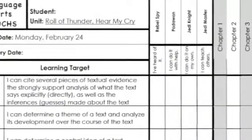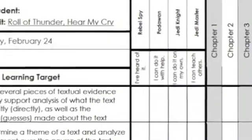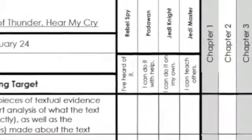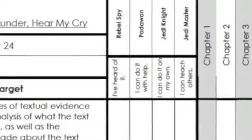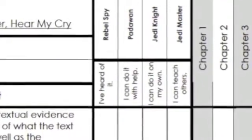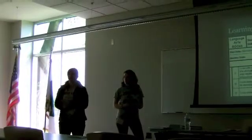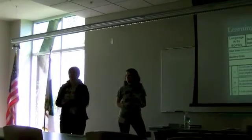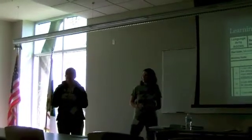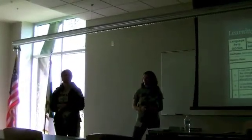You can see on the side I have the different chapters listed. As they go throughout the novel, they reflect at the end of each chapter on what they felt like they learned about those different learning targets and how they've grown. Then at the very end of the unit, they assess themselves again. We're trying to give them that ownership of thinking about their learning and how well they can really do the things they're supposed to be able to do when they leave our classrooms.